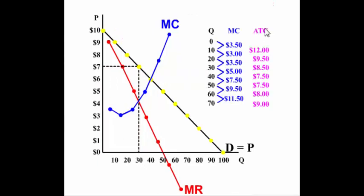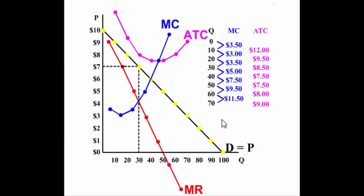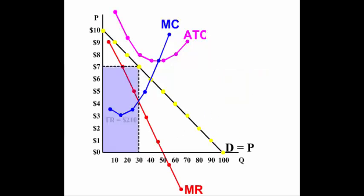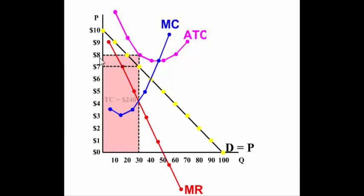Now let's put in an average total cost curve that shows a loss. Average total cost slopes downward, marginal cost touches the average at its lowest point, and notice that the average total cost is above the demand curve at every single quantity. The firm still produces 30 units because that's where MR equals MC, and the price is seven, so total revenue is 210. But at 30 units the average total cost is eight, and eight times 30 is 240. So the firm is earning a loss of 30 dollars: 210 in revenue versus 240 in costs.